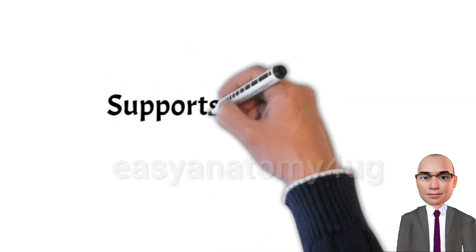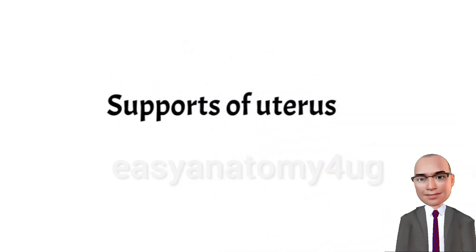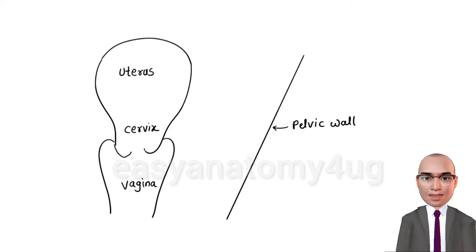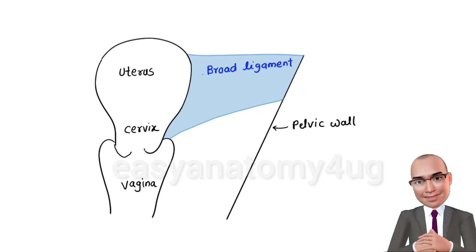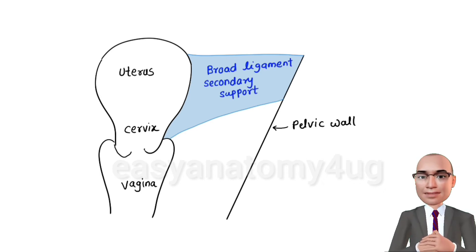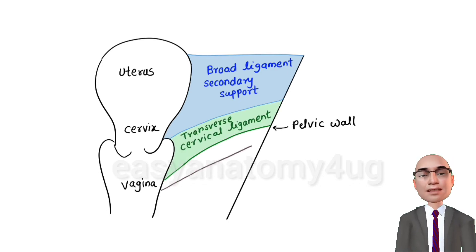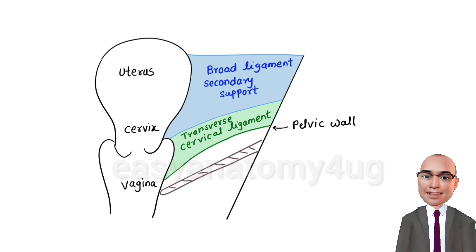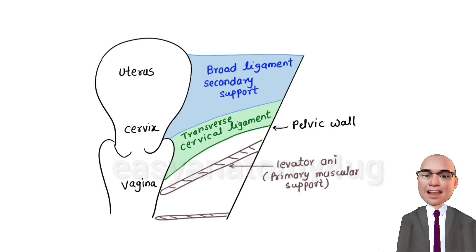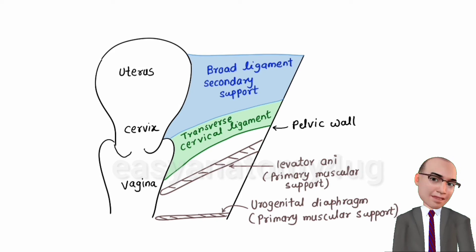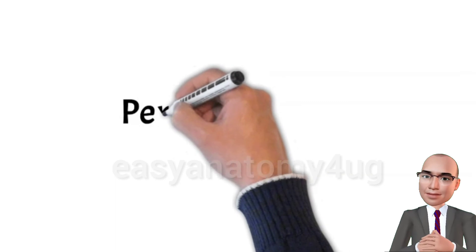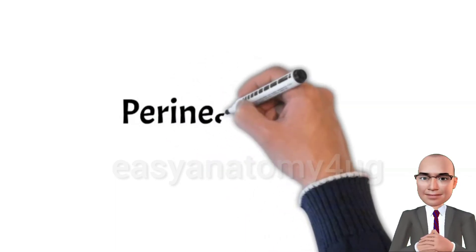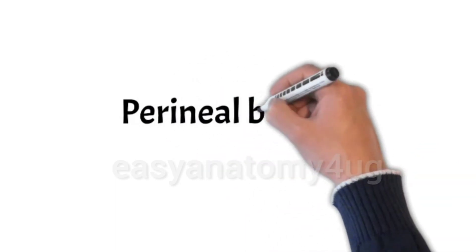Let's draw the supports of the uterus. These are described as secondary supports, primary fibromuscular supports, and primary muscular supports. The broad ligament is a secondary support. The lateral or transverse cervical ligament is the primary fibromuscular support. The levator ani and urogenital diaphragm are primary muscular supports.